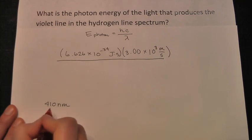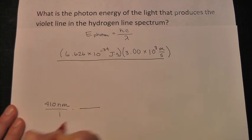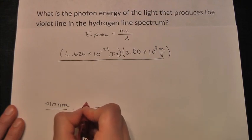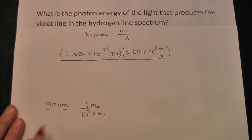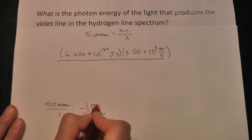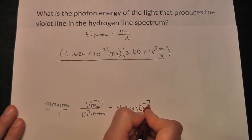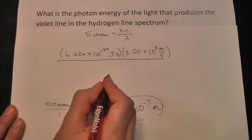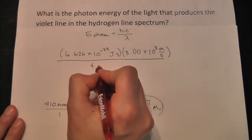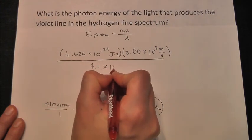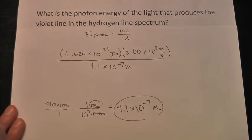410 nanometers. How many meters is that? Well, we need to do a little dimensional analysis. I know 10 to the ninth nanometers is in one meter. That would make my units cancel, giving me meters. I do the math on that and I get 4.1 times 10 to the negative seventh meters. I'm going to take that number and put it here. 4.1 times 10 to the negative seventh meters.